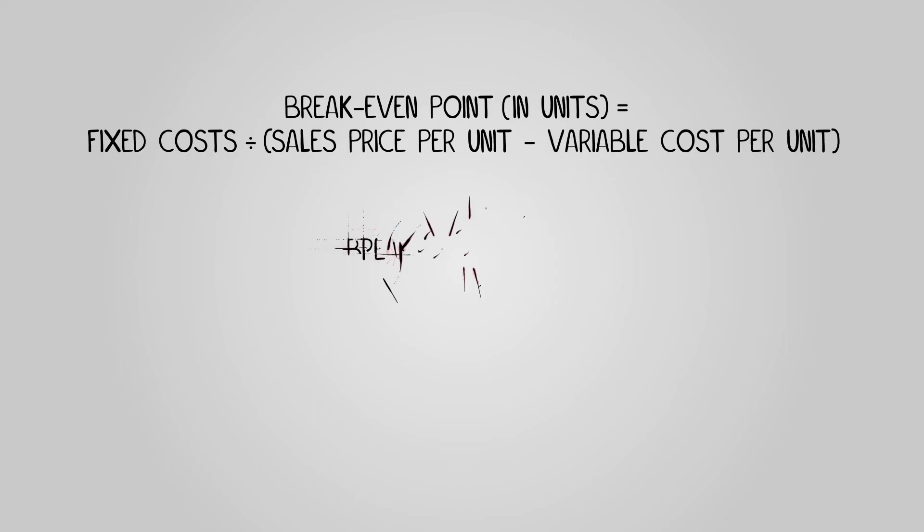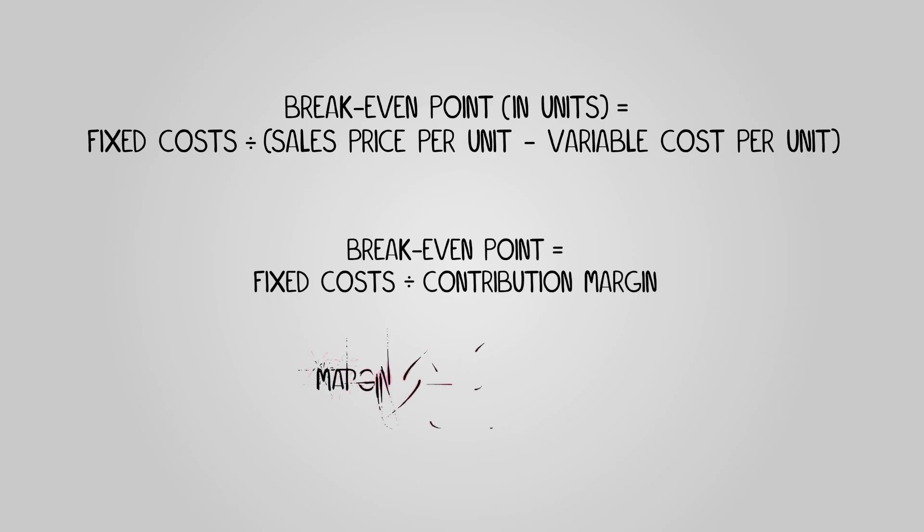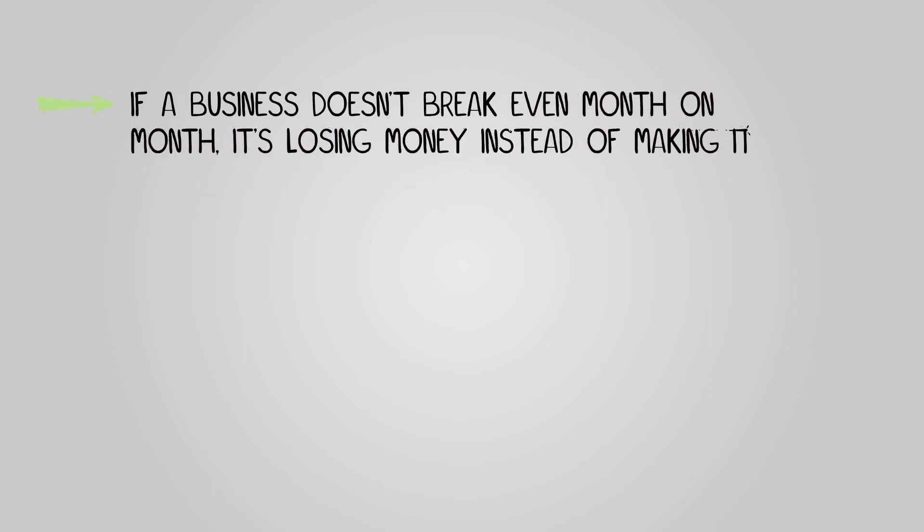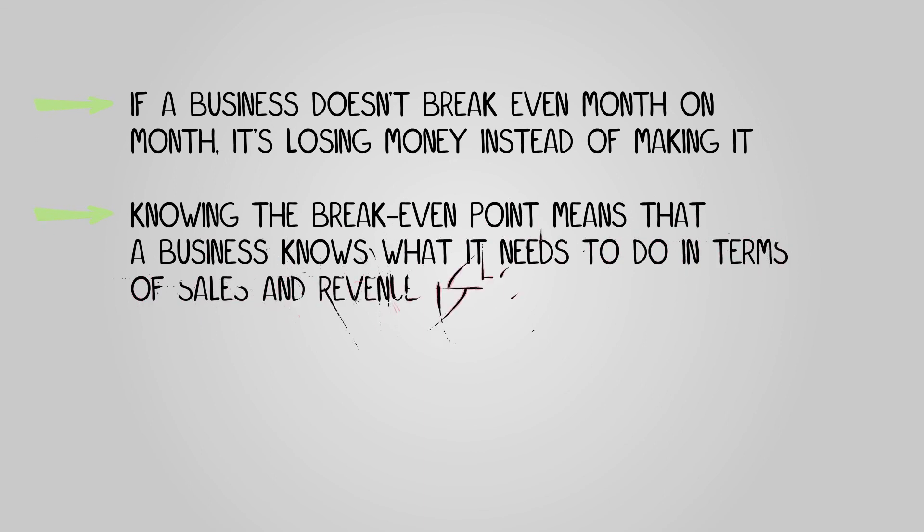The break-even point in pounds can be calculated as fixed costs divided by the contribution margin. The margin of safety in pounds can be calculated as actual sales minus the break-even point. If a business doesn't break even month on month, it's losing money instead of making it. Knowing the break-even point means that a business knows what it needs to do in terms of sales and revenue to be profitable.